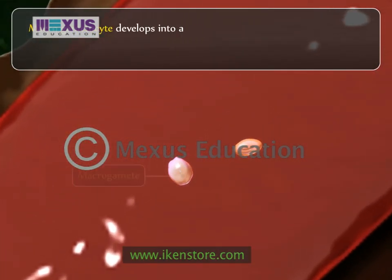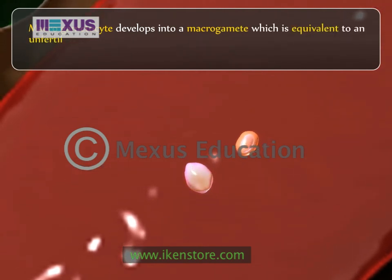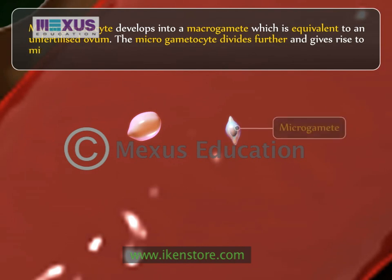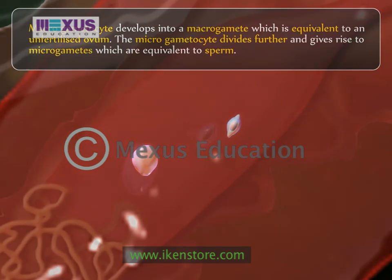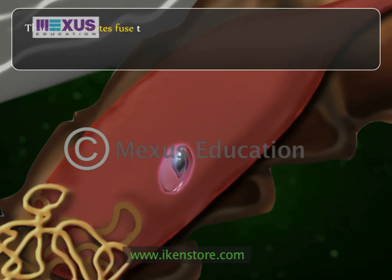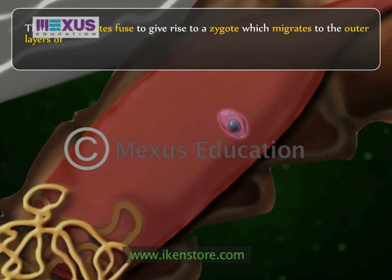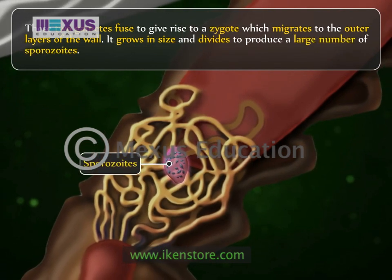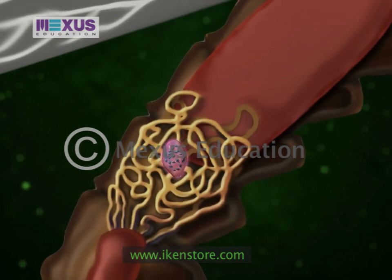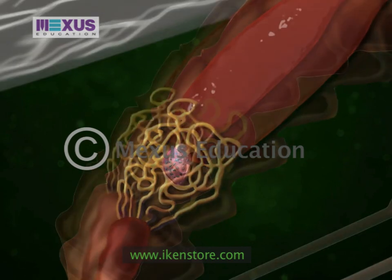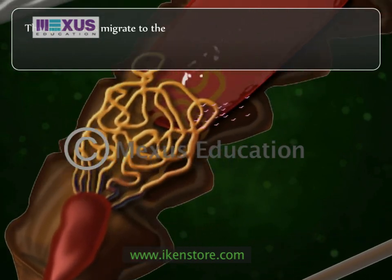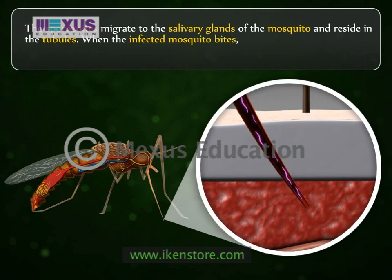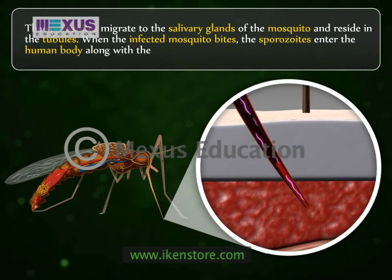Macrogametocytes develop into a macrogamete, which is equivalent to an unfertilized ovum. The microgametocyte divides further and gives rise to microgametes, which are equivalent to sperm. These two gametes fuse to give rise to a zygote which migrates to the outer layers of the wall, grows in size, and divides to produce a large number of sporozoites. This is called the sexual cycle, as the parasite proliferates by sexual reproduction. The sporozoites migrate to the salivary glands of the mosquito, and when the infected mosquito bites, the sporozoites enter the human body along with the saliva.